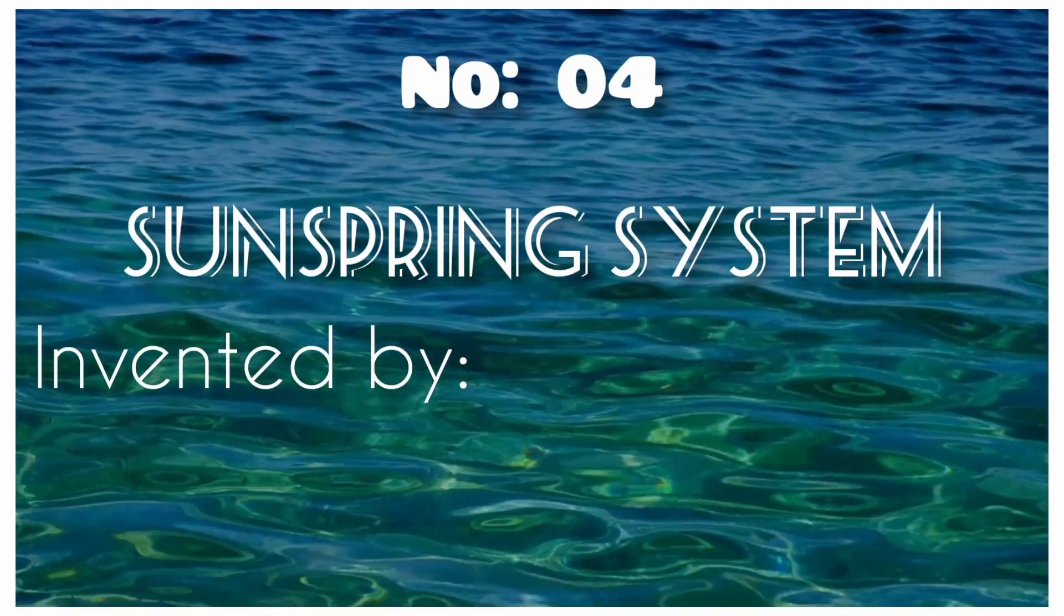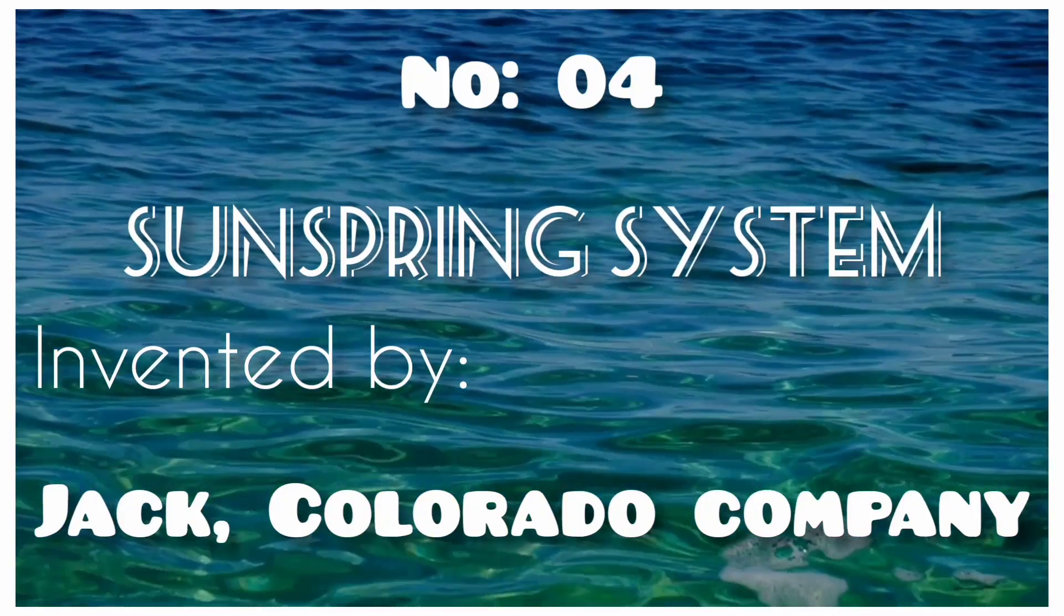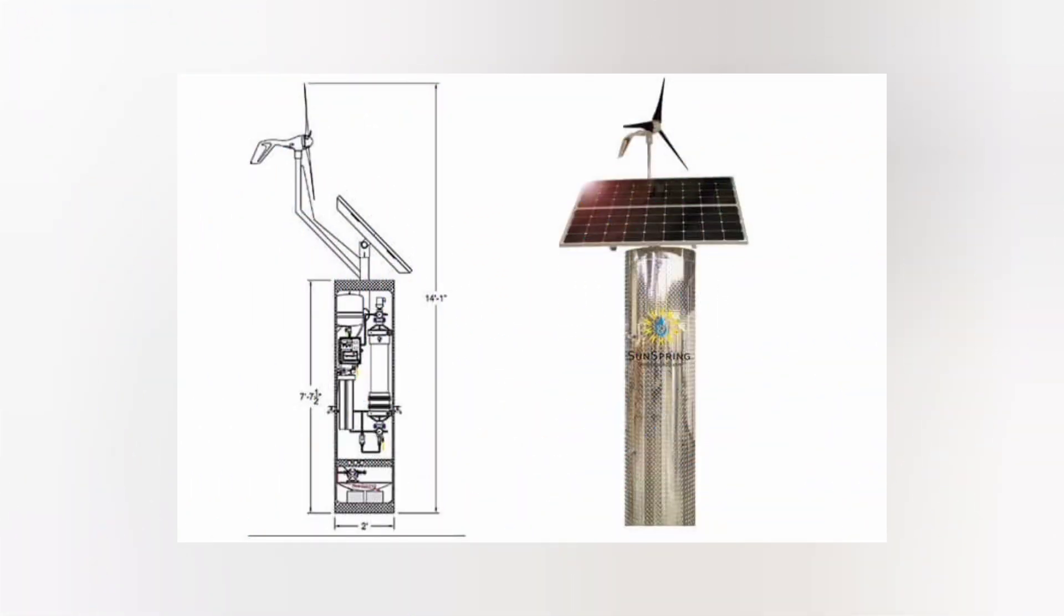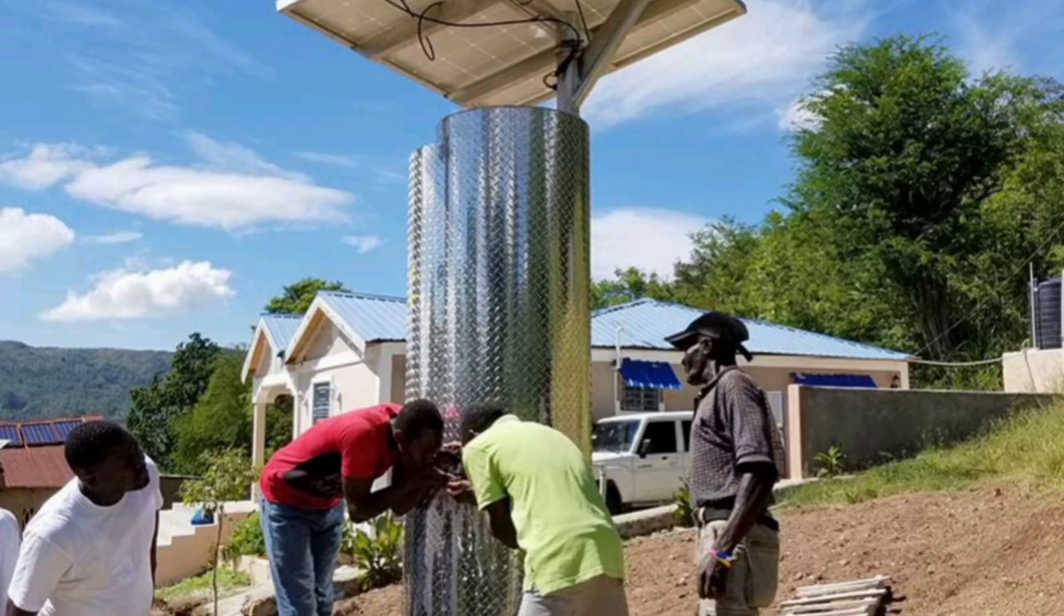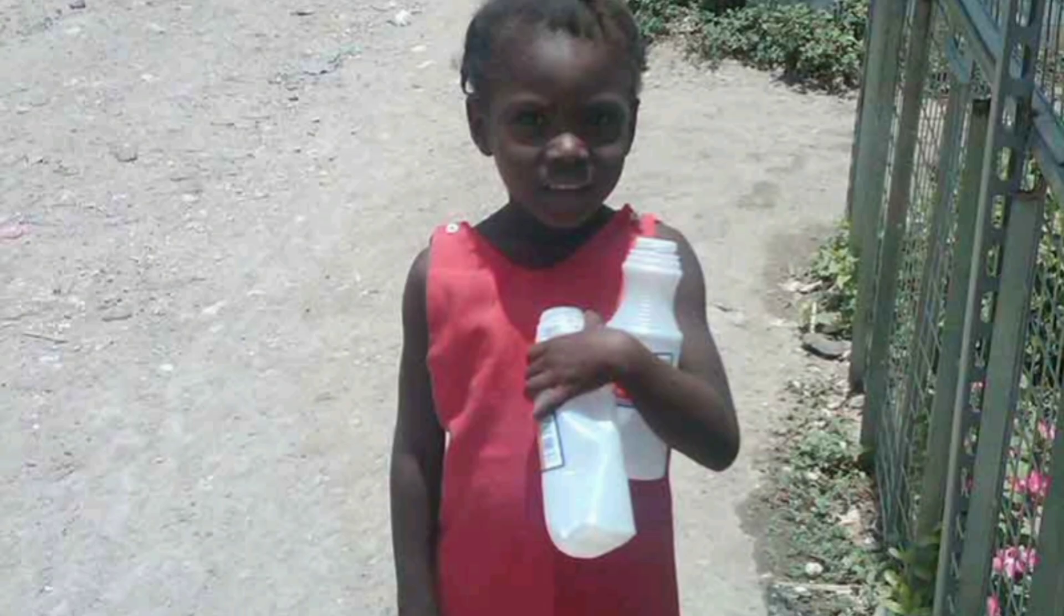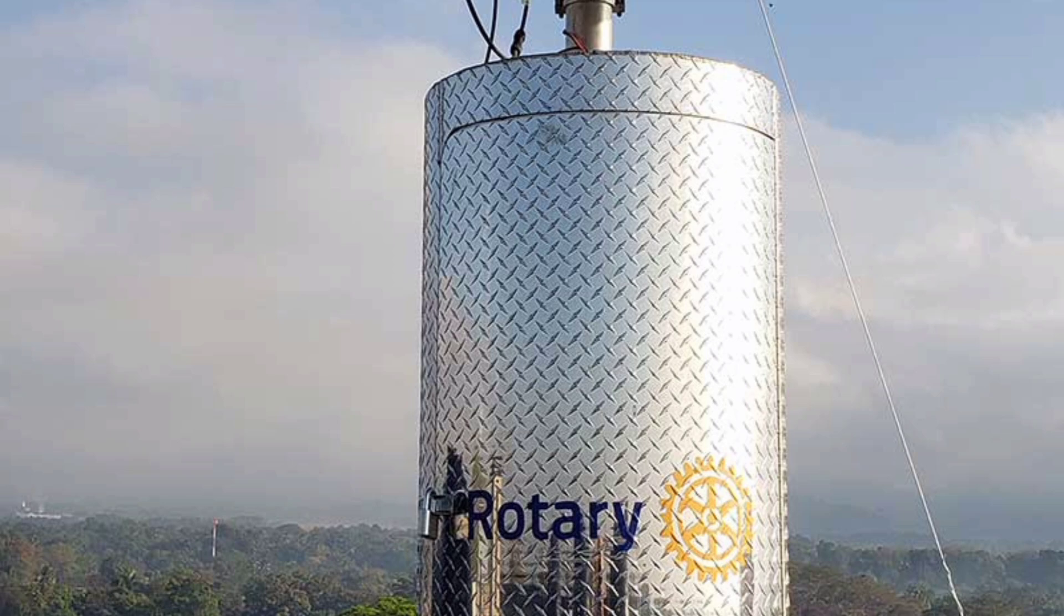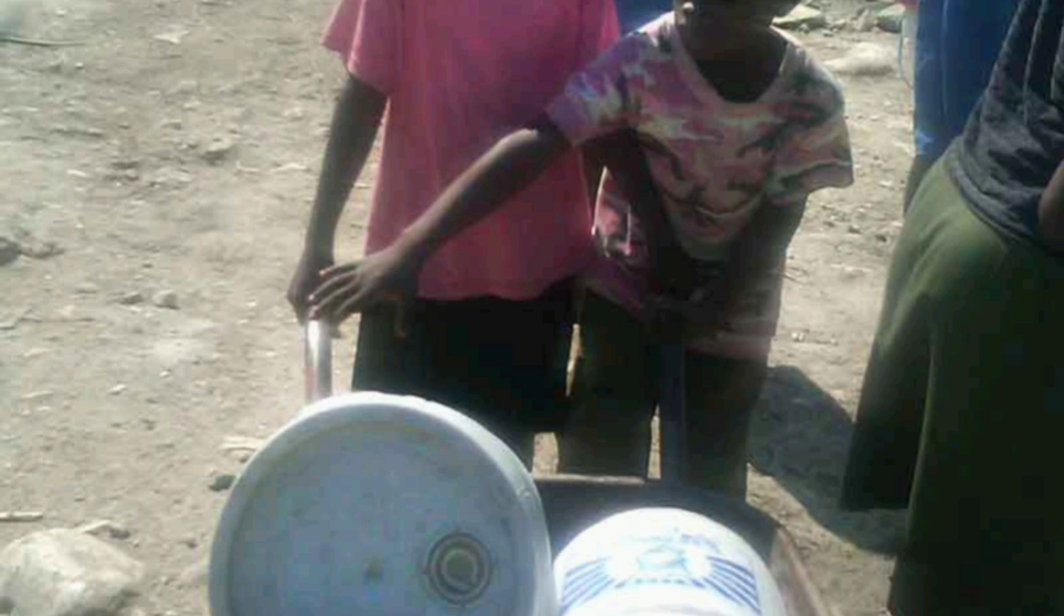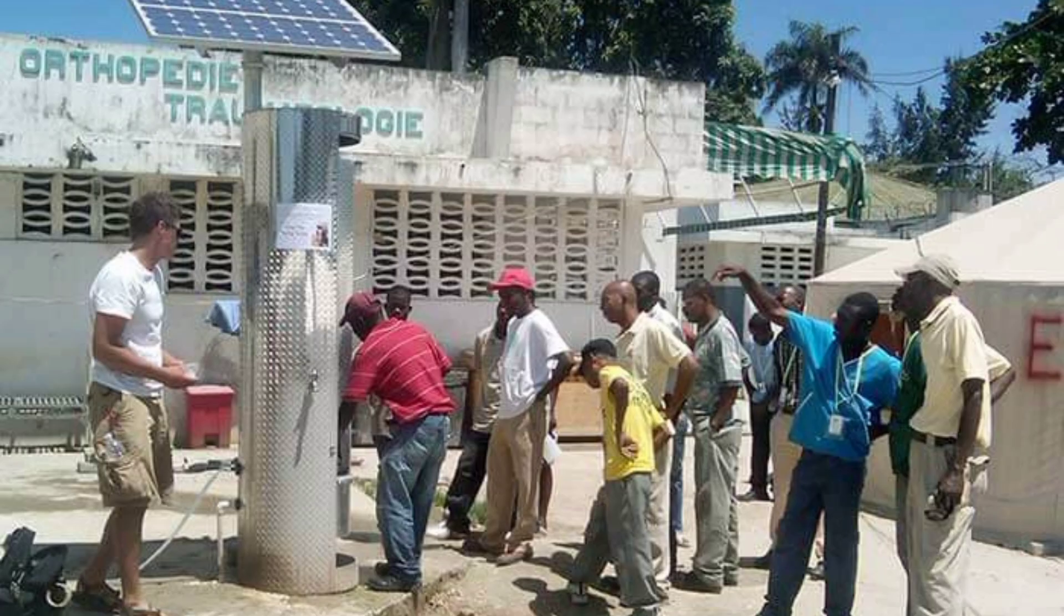Number 4. SunSpring System. A Colorado company has developed a water purification system that can purify up to 5,000 gallons of water daily with just a battery that runs on renewable energy. This water treatment technology is called SunSpring. This system uses a seven-mile membrane that is 0.02 microns thick, stopping microbiological toxins.